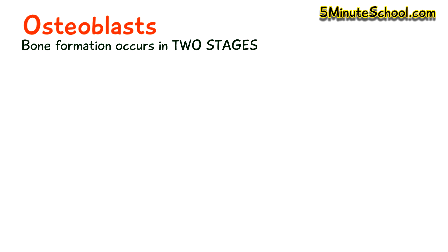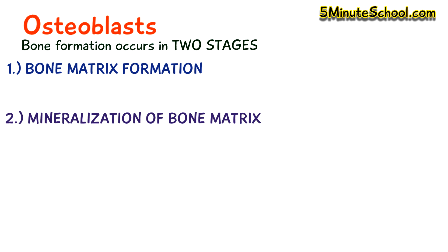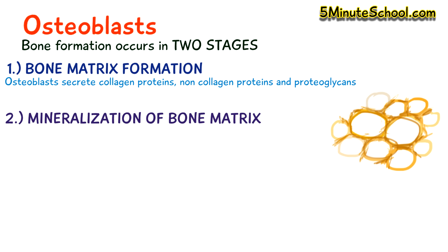When osteoblasts are synthesizing bone it usually occurs in two steps. First we have the deposition of an organic matrix, and then we have the mineralization of the matrix. The osteoblasts secrete collagen proteins, non-collagen proteins, and proteoglycans which form the organic matrix - that's like the scaffolding or the main structural component.